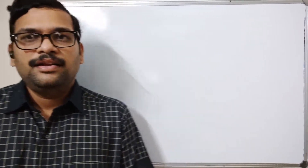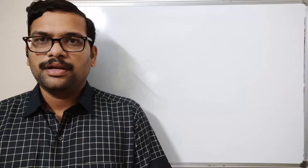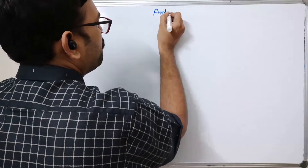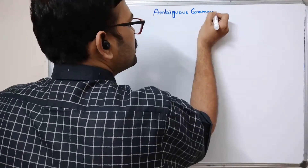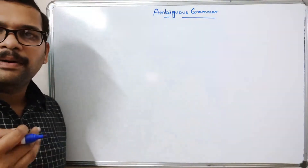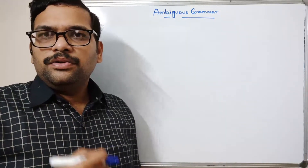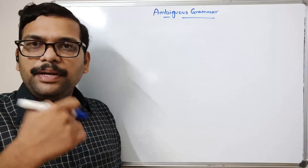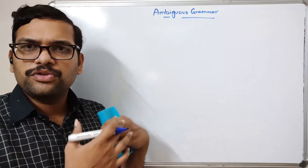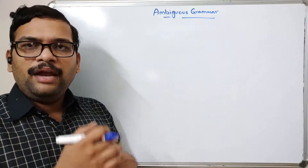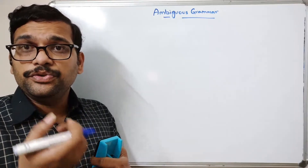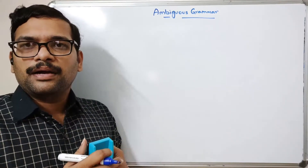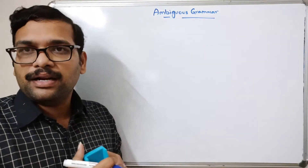Hello friends, welcome back to our channel. In today's session we'll discuss one more topic in automata theory: ambiguous grammar. In the previous session we discussed context-free grammar and the parse tree, or derivation tree. This parse tree is used in compiler construction.